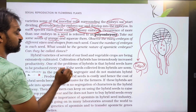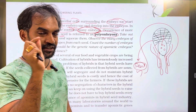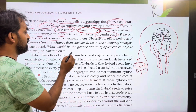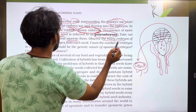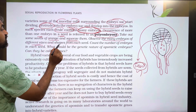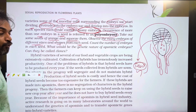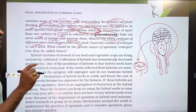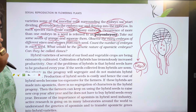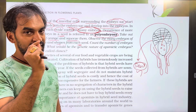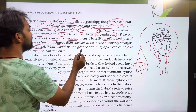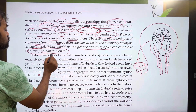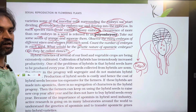Take out some seeds of orange. If you look at the embryos in an orange seed, you can see embryos of different sizes and shapes. Count the number of embryos in each seed. What would be the genetic nature of apomictic embryos? Can they be called clones? Yes, they can be called clones.